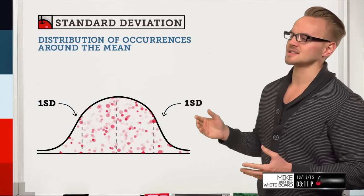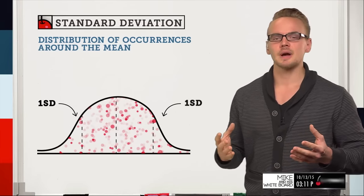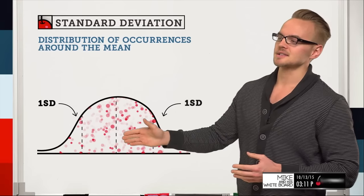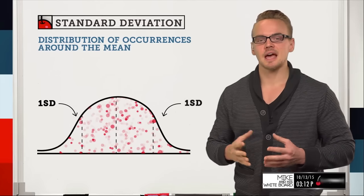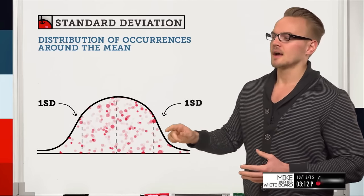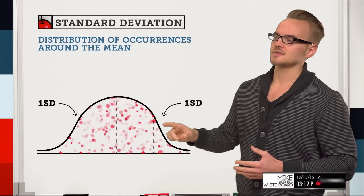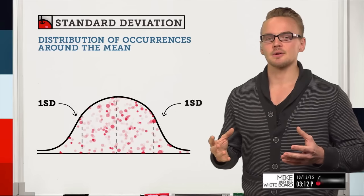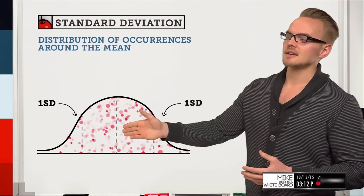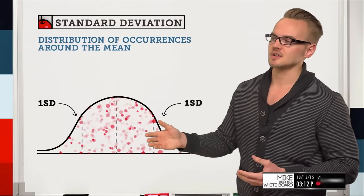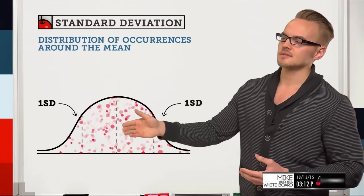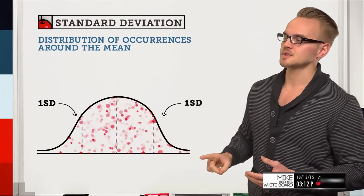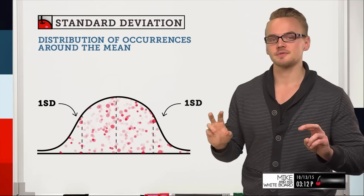Standard deviation is essentially a distribution of occurrences around the mean. If we imagine this middle line here as the stock price, and we've got all these dots which are occurrences happening around that stock price, this curve shows the number of occurrences that lie within that range. We're going to have a lot of small moves with that stock — the majority of those moves will be very close to the stock price. However, we're also going to see those large moves, which we consider to be the tail risk moves.